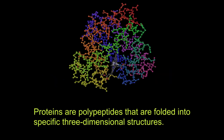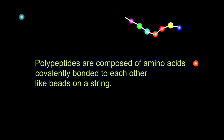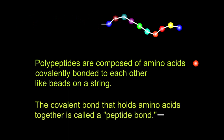Proteins are polypeptides that are folded into specific three-dimensional structures. Polypeptides are composed of amino acids covalently bonded to each other like beads on a string. The covalent bond that holds amino acids together is called a peptide bond.